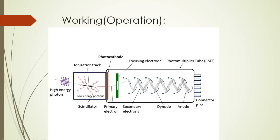These low energy photons are made to fall on the photocathode of the photomultiplier tube. The photomultiplier tube is a vacuum tube consisting of a photocathode, an anode, and several dynode stages — I will introduce the term dynode a little later.